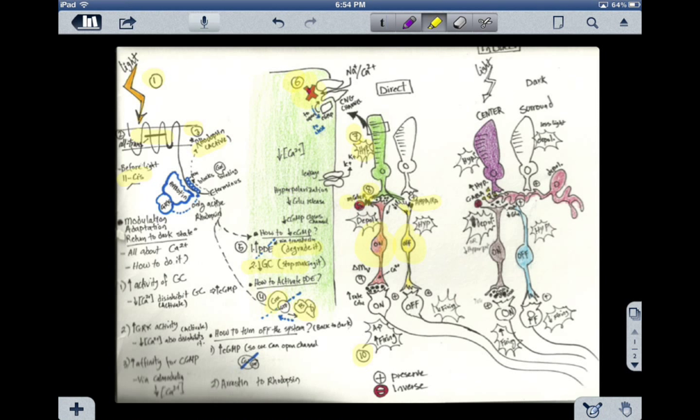The mGluR, the metabotropic one, actually inverts the signal, versus the AMPA, which is ionotropic and preserves the signal. As you can see here, the red means inverse, and the plus means keep the signal as it is.